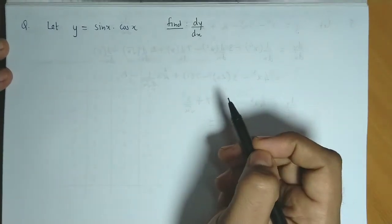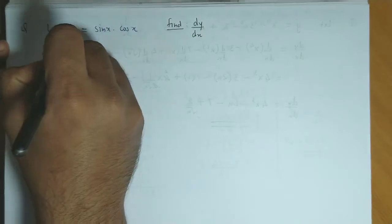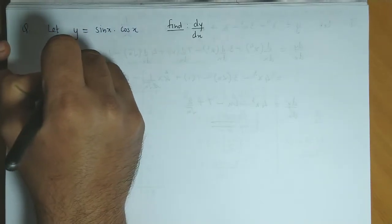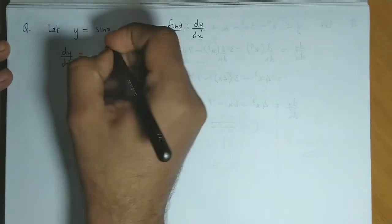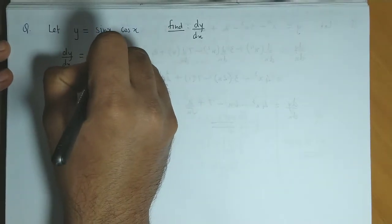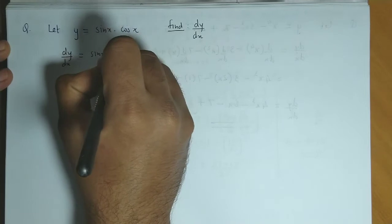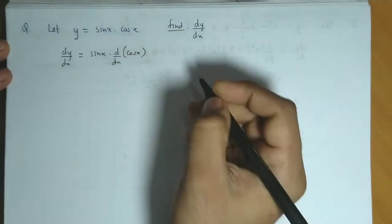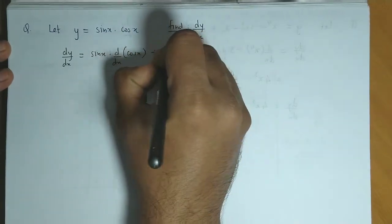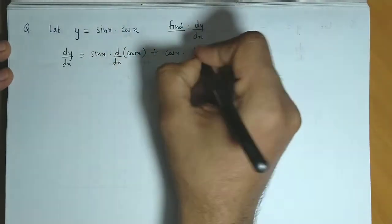We have dy/dx equals, now applying the multiplication rule: sin x times derivative of cos x plus cos x times derivative of sin x.